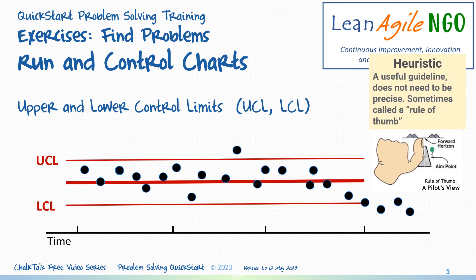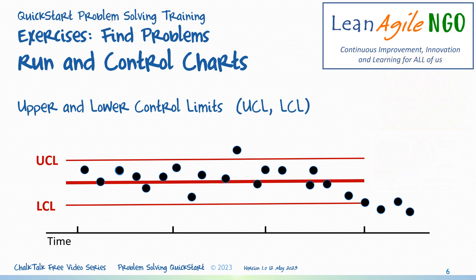Now what do you see? I see three things. First, there's an outlier event. I wonder what happened here. Perhaps we should talk with someone and learn more about this.